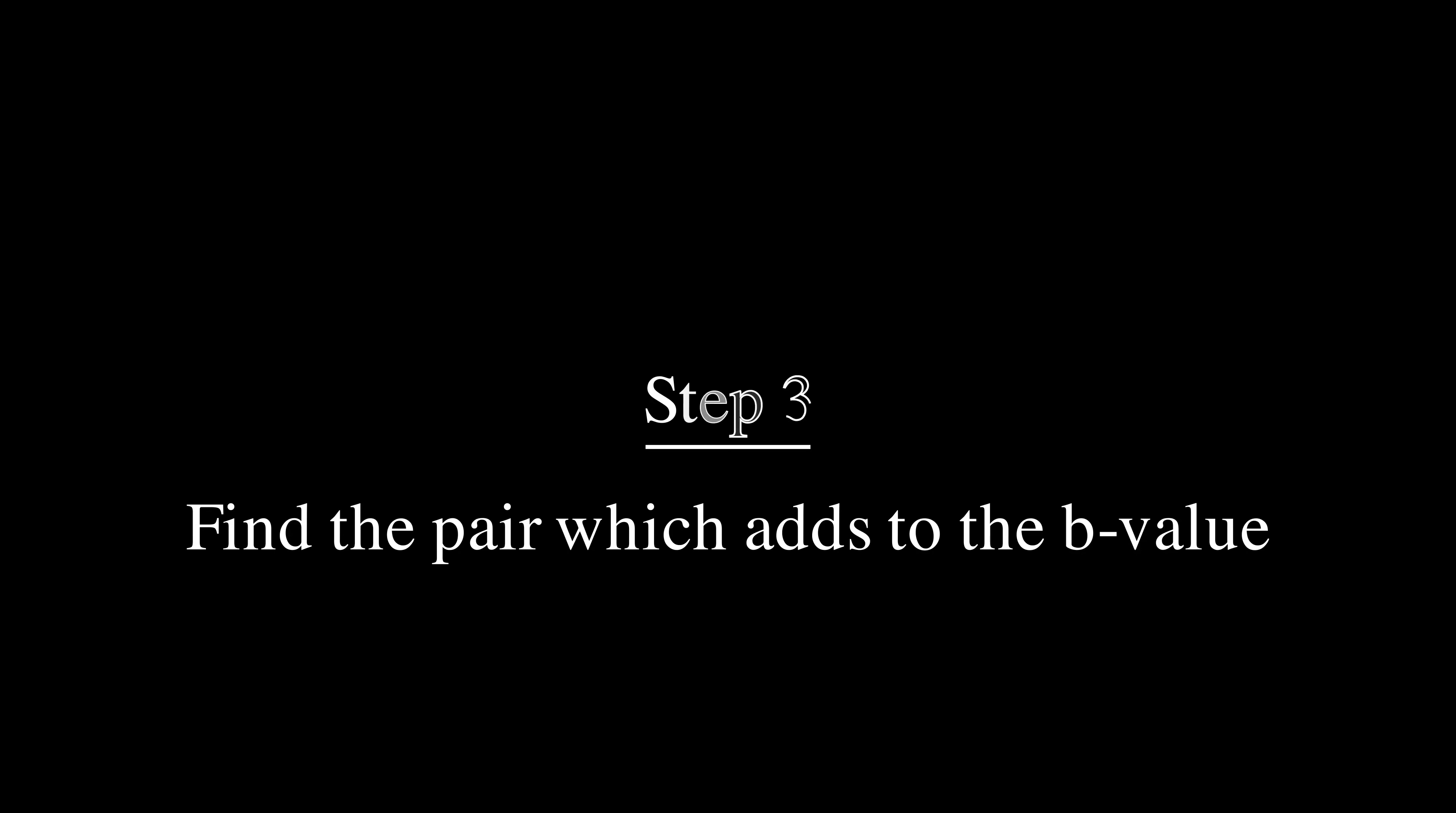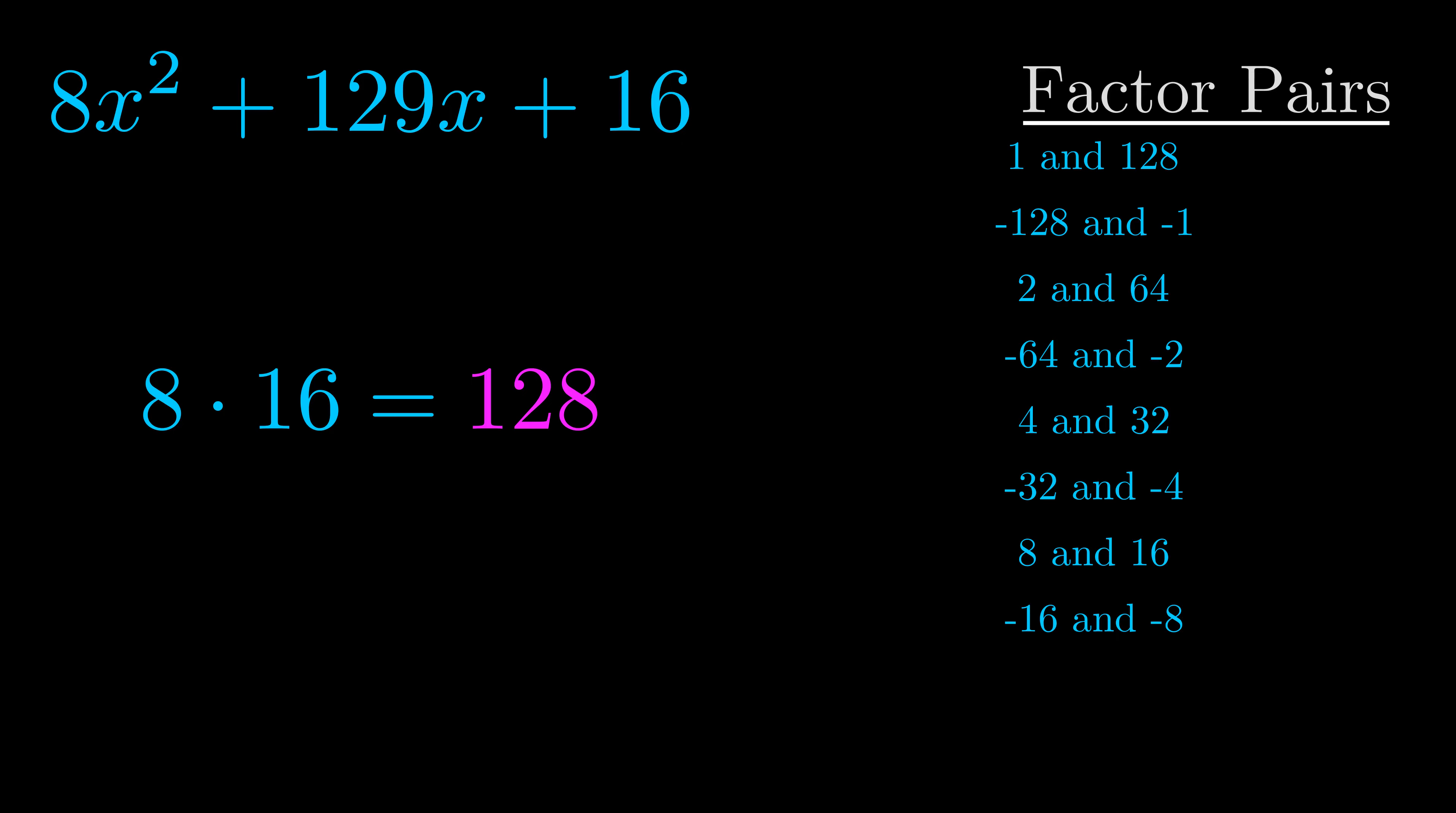The b value is the coefficient on the x term. That's the middle term, the one that we haven't done anything with yet. And really, this is the only factor pair that we need.